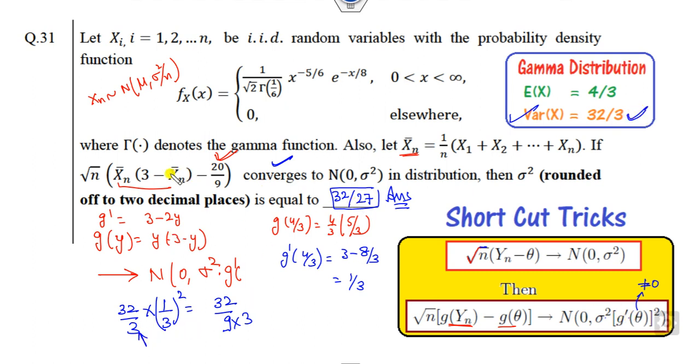G dash, if you consider what the function is here, this is my g. What is the derivative at the point of the mean? The mean is 4 by 3, so 3 minus 4 by 3 is 1 by 3.